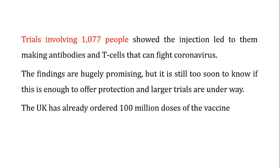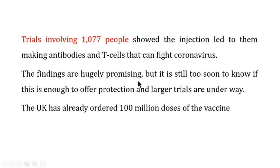Trials have been conducted on about 1,100 people and showed that the injection led them to make antibodies and T-cells that can fight coronavirus. If a vaccine can make both antibodies and T-cells, it has the potential to fight that particular virus. These findings are hugely promising, but it is still too soon to know if this is enough to offer protection, and larger trials are still underway — though initial results are very promising.